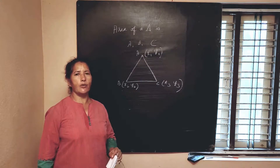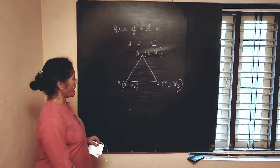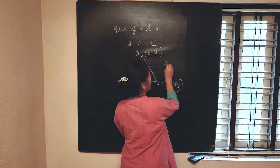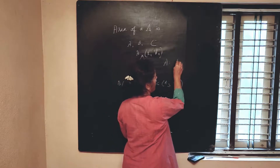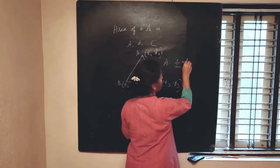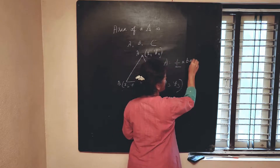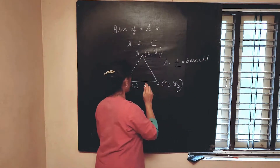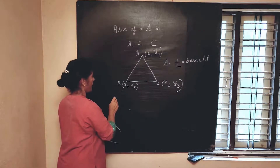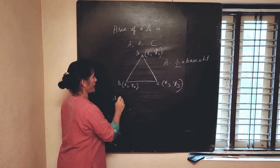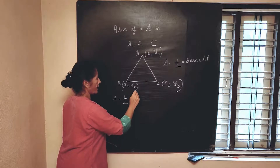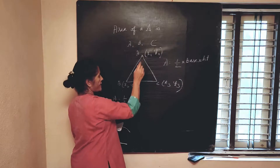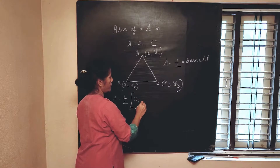It is very easy to remember. Area of the triangle is equal to half into base into height. But here what I do is, area of the triangle is equal to half into x1 into...